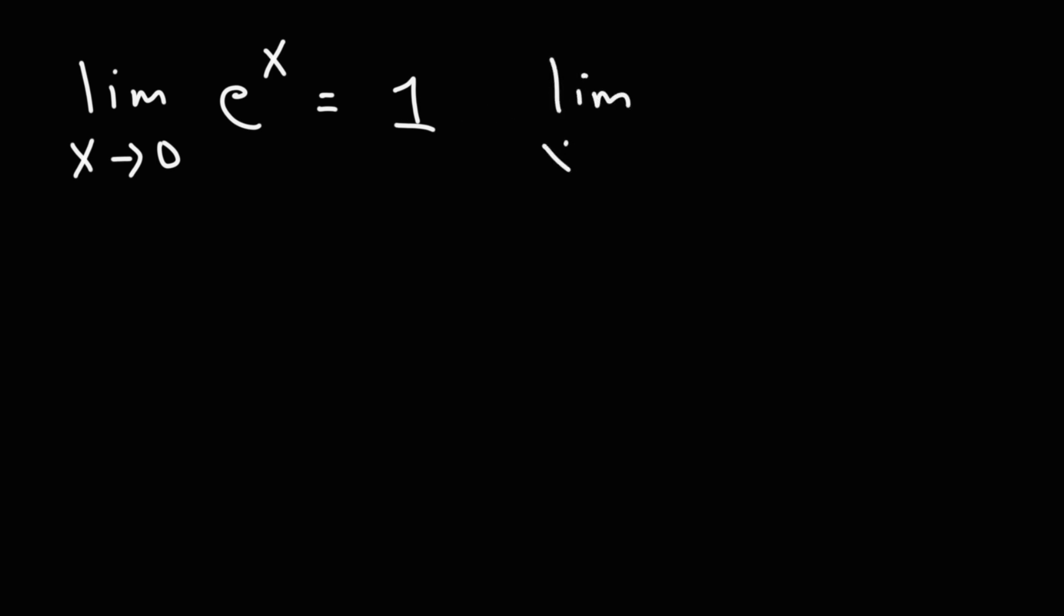Now, for the next one, you just have to know it. The limit as x approaches 0 of the expression e raised to the x minus 1 over x. That's going to be 1.